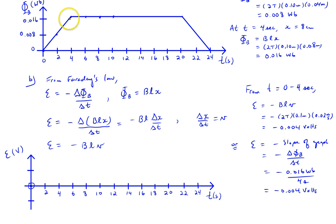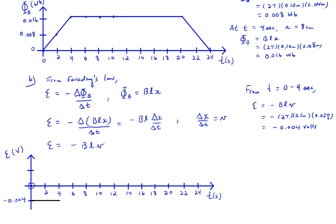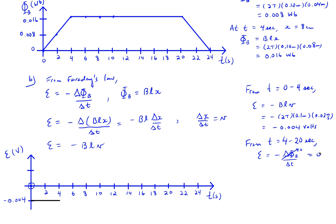During the 0 to 4 second interval, the induced EMF is constant at negative 0.004 volts, so we draw a horizontal line below the x-axis at that value. From 4 seconds to 20 seconds, the flux is not changing — the slope is 0 — so there is no EMF induced while the loop is completely enclosed within the field. We draw a horizontal line on the x-axis for that 16-second interval.